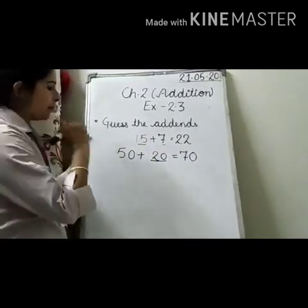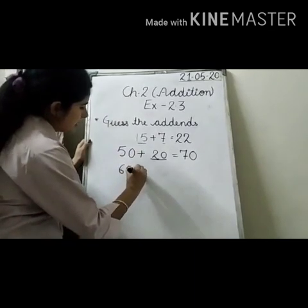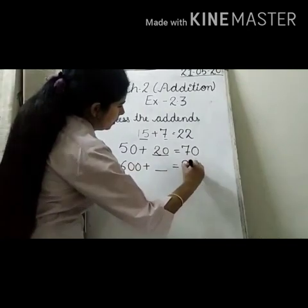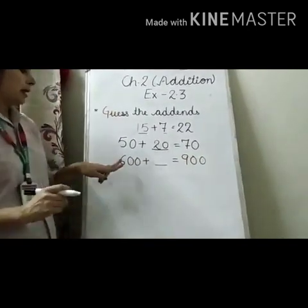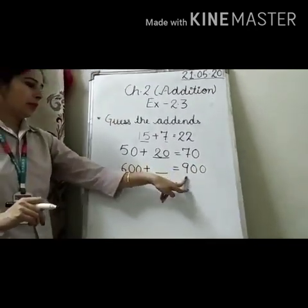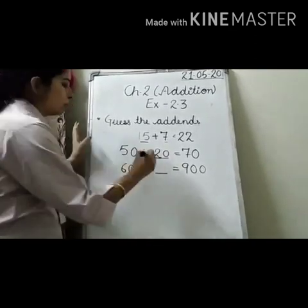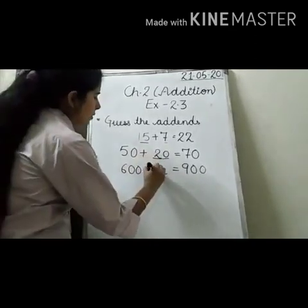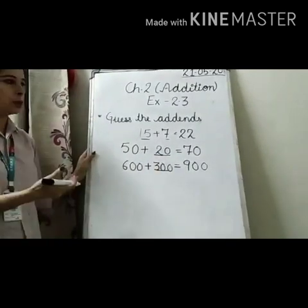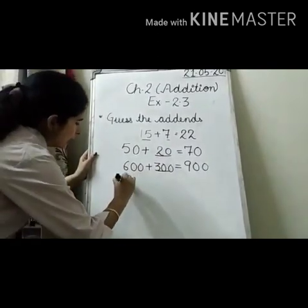Next example: 600 plus dash equals 900. What must be added to 6 to make 9? We will add 300. So the missing addend is 300.